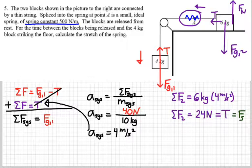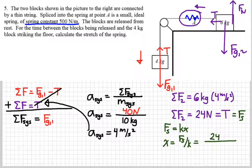So now I can use Hooke's Law, solve for x, and then just plug in what I've got. I've got a spring force of 24 Newtons. The spring constant is 500 Newtons per meter.